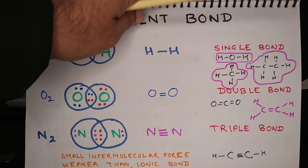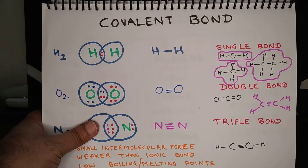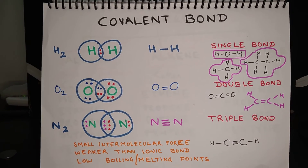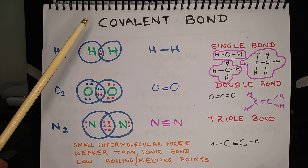Now carbon can make bonds with other elements or other atoms of carbon by either giving up four electrons or gaining four electrons. But transfer of four electrons will involve too much energy, which is not possible under practical circumstances. So carbon makes bonds by sharing of electrons, and when a bond is formed because of sharing of electrons, it is called a covalent bond.